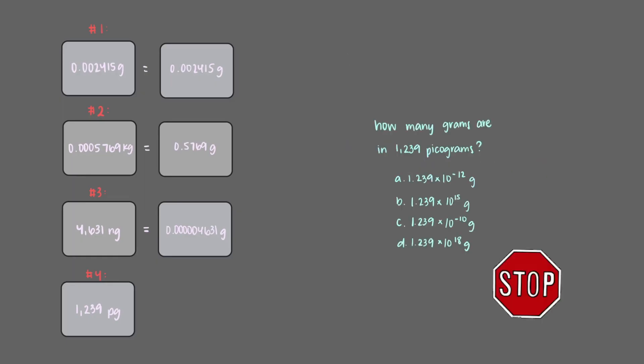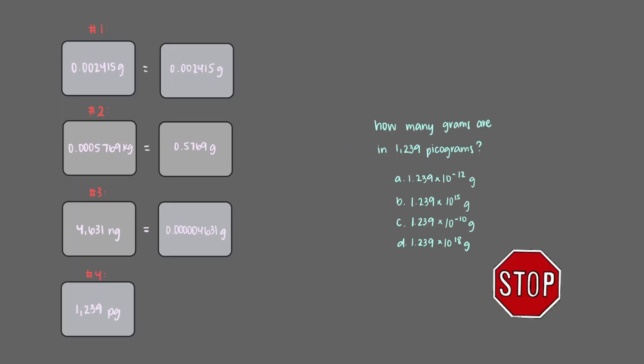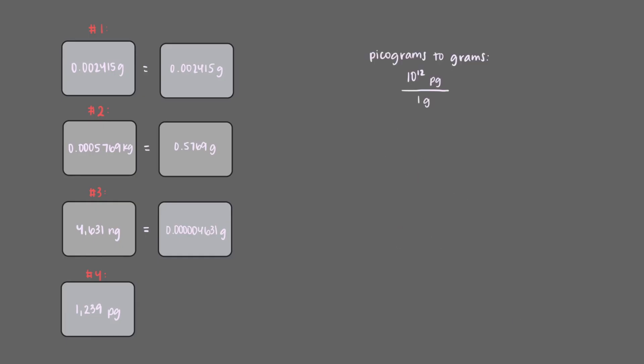Now for our last gold nugget. How many grams are in 1,239 picograms? There are 10 to the 12 picograms in 1 gram, so now we can set up our conversion. Once we multiply everything out, we see that this last gold nugget has this mass.